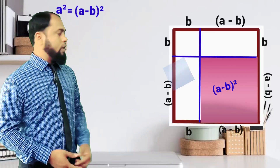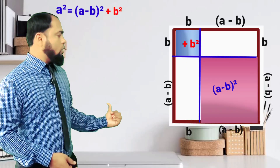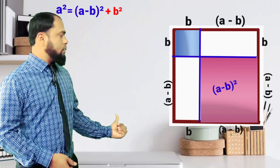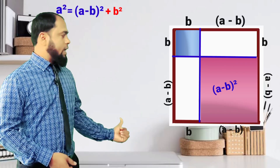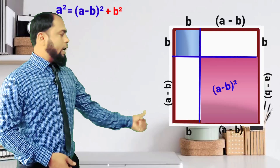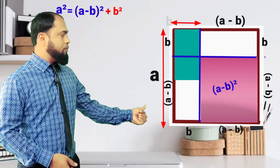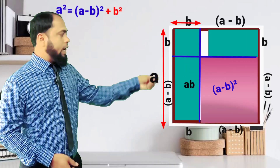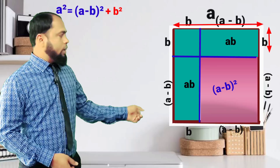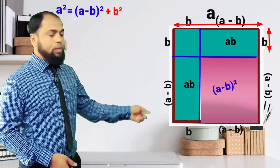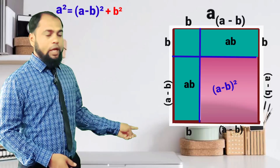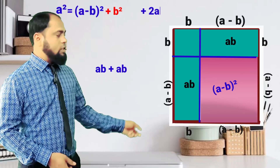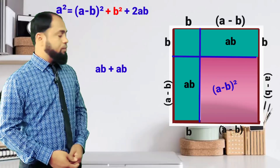Plus the area of the second small square, that is b into b, which is b squared. We also have two rectangles, each with area a into b, giving two times a into b, that is 2ab.